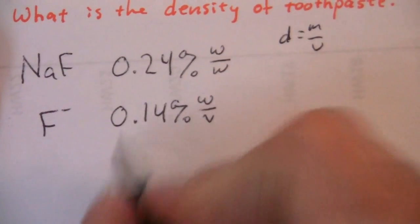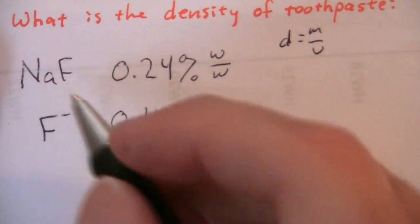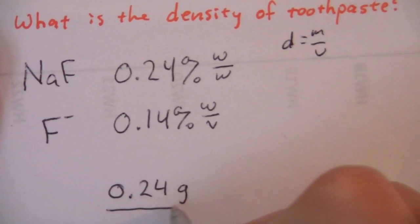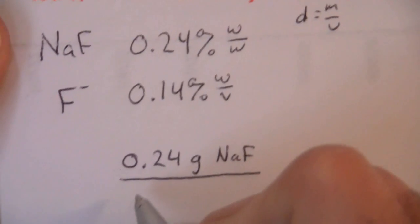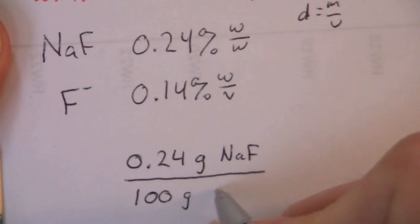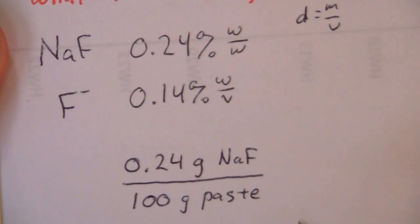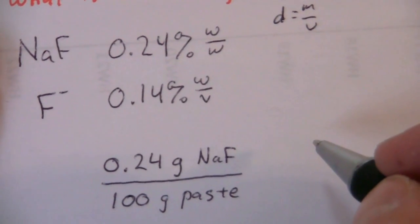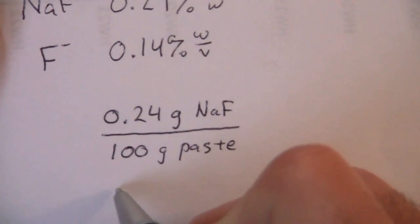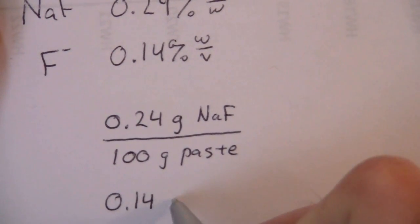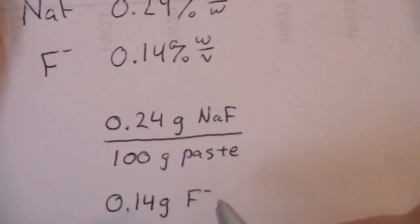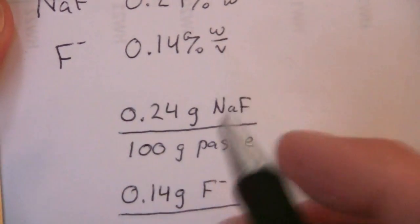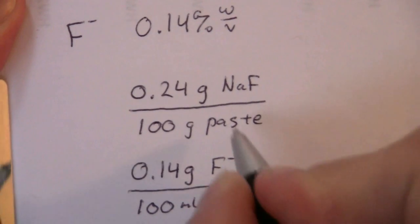This 0.24% weight for NaF means I have 0.24 grams of NaF per 100 grams of the paste. That's one bit of information. And the same we can do for the fluoride ion. We can rewrite this as 0.14 grams of fluoride per 100 milliliters of the paste.